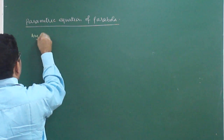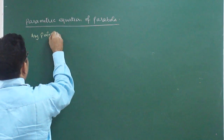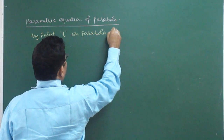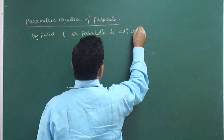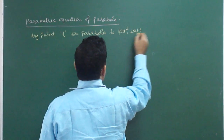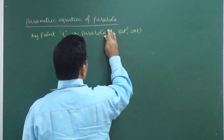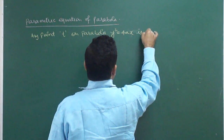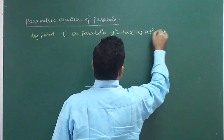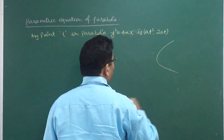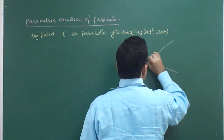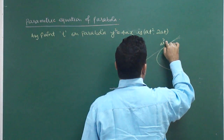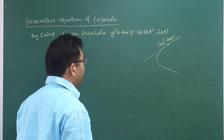Any point T on parabola y² = 4ax is given as (at², 2at). So the point T on the parabola is (at², 2at). Equation of tangent at point T on the parabola is what?